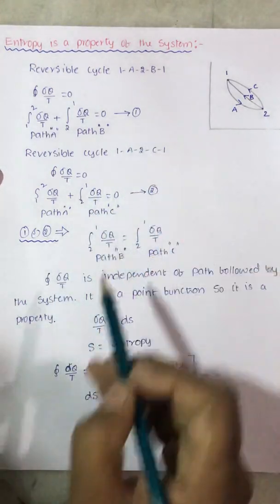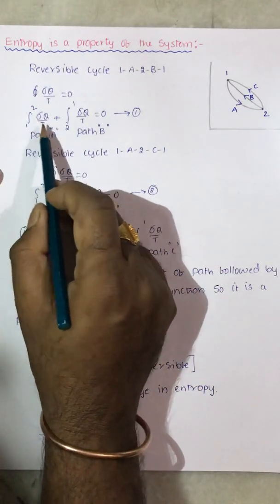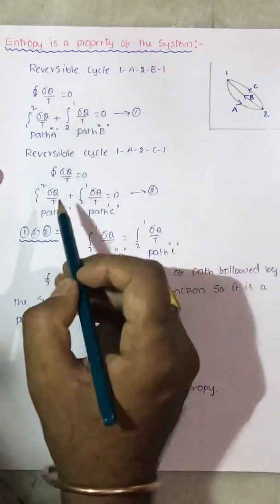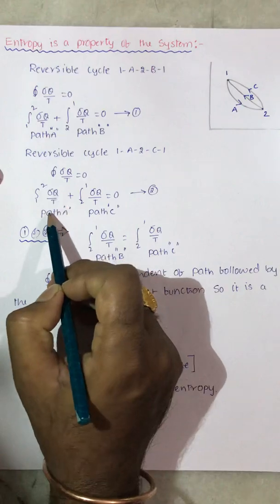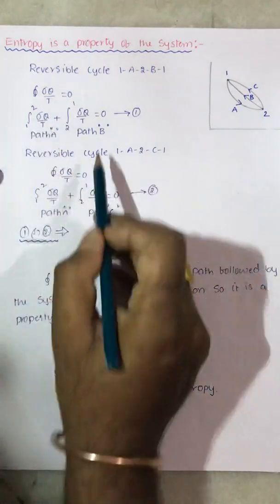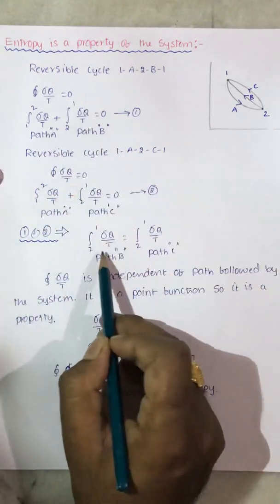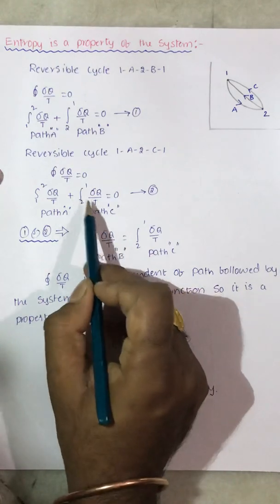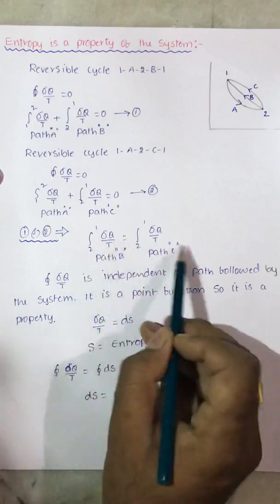Now from equations 1 and 2, the integral from 1 to 2 of δq/T along path A equals the negative of the remaining term in each equation. Since both equations have the same left-hand side parameter, we can equate the right-hand side parameters. So the integral from 2 to 1 of δq/T along path B equals the integral from 2 to 1 of δq/T along path C — the minus signs cancel, so they are equal.